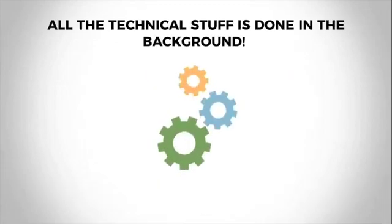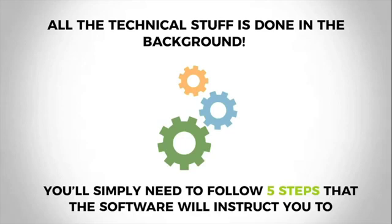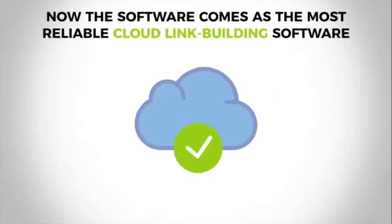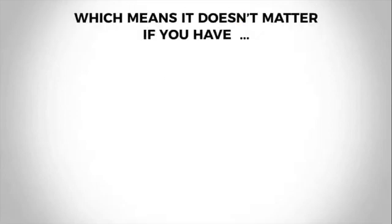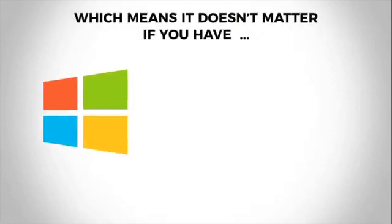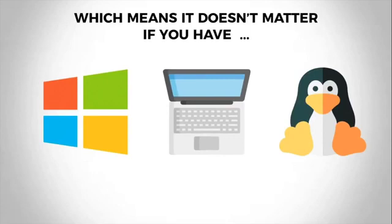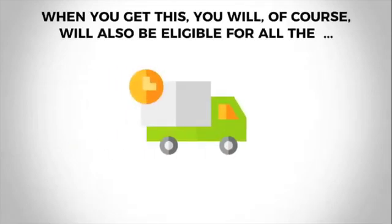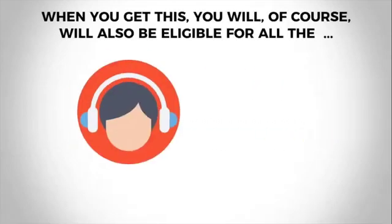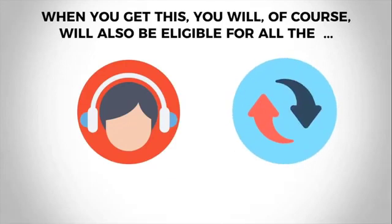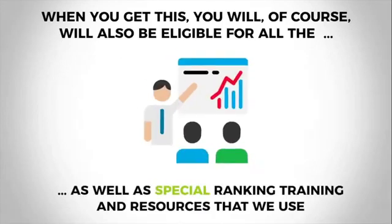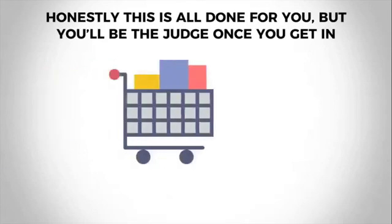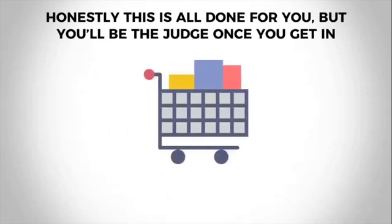Now all the technical stuff is done in the background. You'll simply need to follow five steps that the software will instruct you to, and you're good to go. For real, that's all you need to do. Now the software comes with the most reliable cloud link building software, which means it doesn't matter if you have a PC, a Mac, or any other operating system in the world, it's going to work for you as long as you have access to the internet. When you get this, you will of course also be eligible for all the software support and continuing updates, as well as special ranking training and resources that we use.